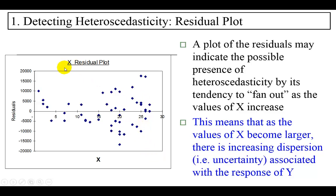The reverse could also be the case. It can actually contract too, depending on what the outcome is. This means that, in this case, as the values of X become larger as you move from left to right, there is increasing dispersion, meaning increasing uncertainty, associated with the values of Y.